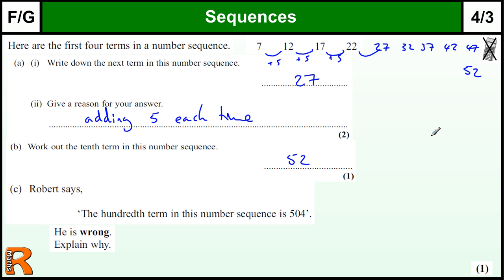Hopefully we spotted that it always ends in 2 and 7. Robert says the 100th term in this number sequence is 504. He is wrong. Explain why.